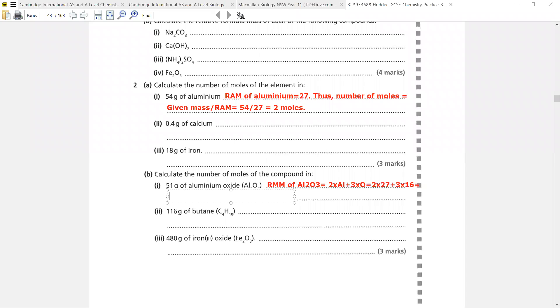So basically what I will be doing here is 54 plus 3 into 16 is 48. Can you tell me what will be the total? It is 102. I hope you understand. So now number of moles is always equal to mass divided by RMM. Note down the formula: given mass divided by RMM.